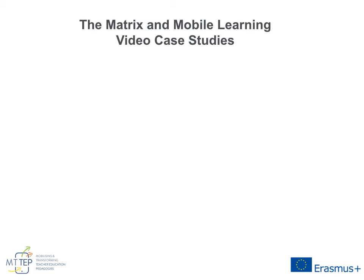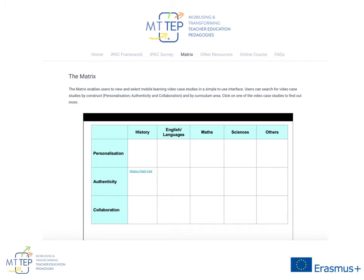The third element is what we call the matrix, and this is associated with a series of video case studies which we've produced. Here you can see how these case studies are located within the toolkit. So, for example, if you've completed the survey, the feedback from the survey might direct you to look at one of these particular scenarios. And if it happened to be in the area of authenticity, you might select the history scenario, which we can see here.